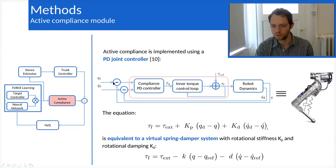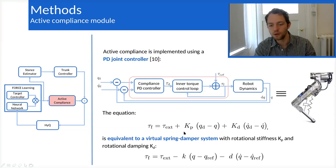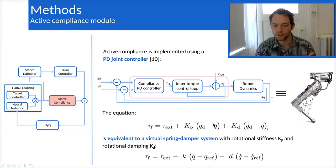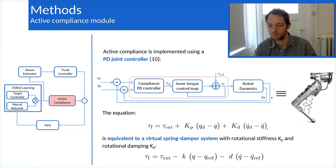This robot is virtually compliant in the sense that it implements an active compliance module. Basically, this is a PD joint controller that controls the torques of the hydraulically actuated joints. If we have a look at the control loop and do a few simplifications, we can assume that the equation is equivalent to a virtual spring damper system that would be applied on the joint itself. So tuning the KP and KD gains of the controller, we can tune, therefore, the virtual spring stiffness and damping.